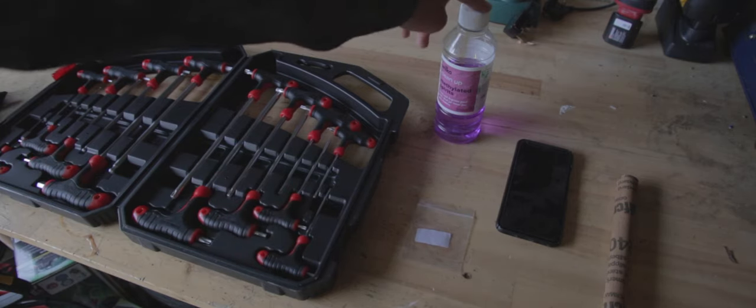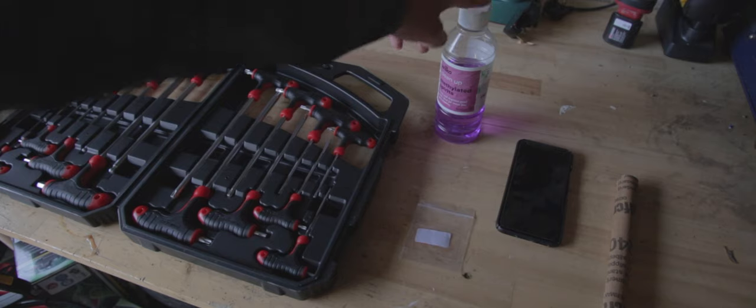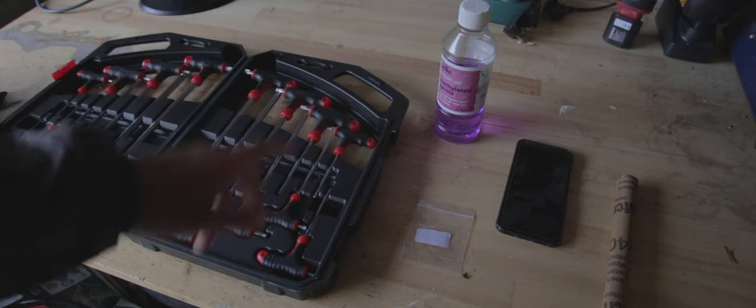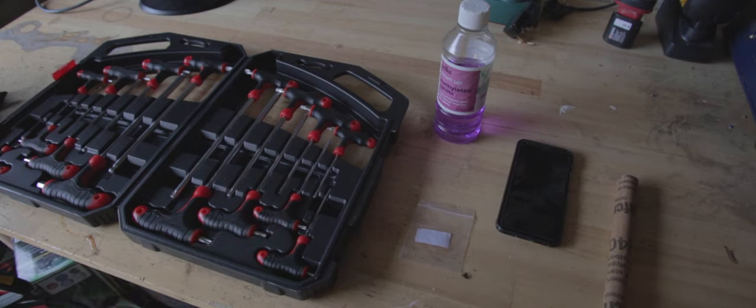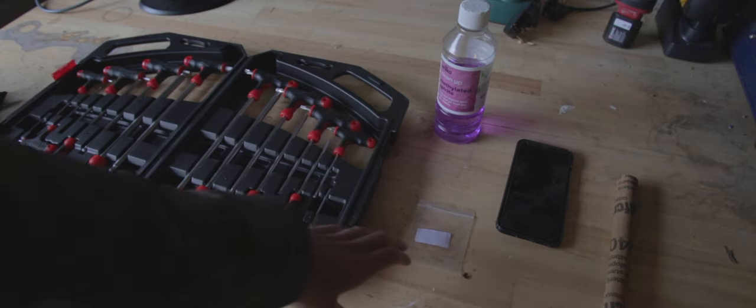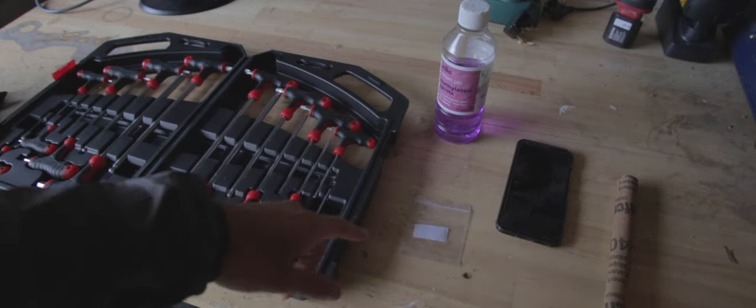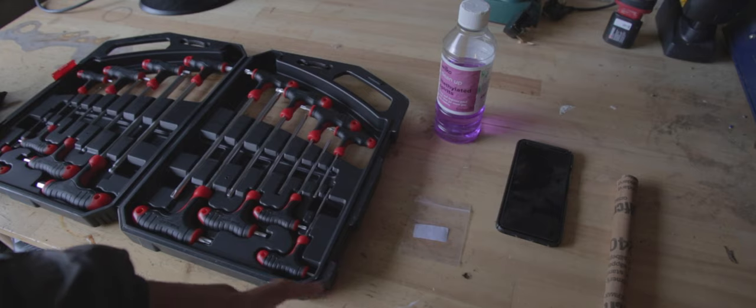This is what will actually soak the disc brake pads and we'll use this to clean the disc brake as well. You can actually use vinegar for exactly the same process. I've not had as much luck with that but it does work supposedly. You also need a small bag which you'll put the pads in.